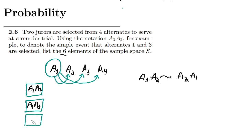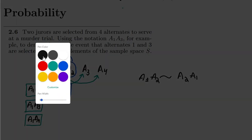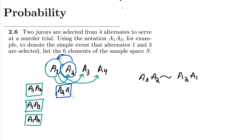So we have a1 a2, a1 a3, and a1 a4 — and their reverses a2 a1, a3 a1, a4 a1 are all equivalent. Now I move to a2. If I write a2 a1, that's already been selected as a1 a2, so I have to remove it.